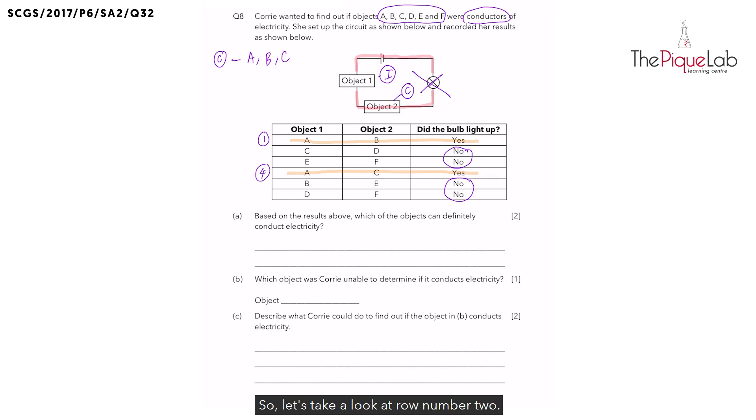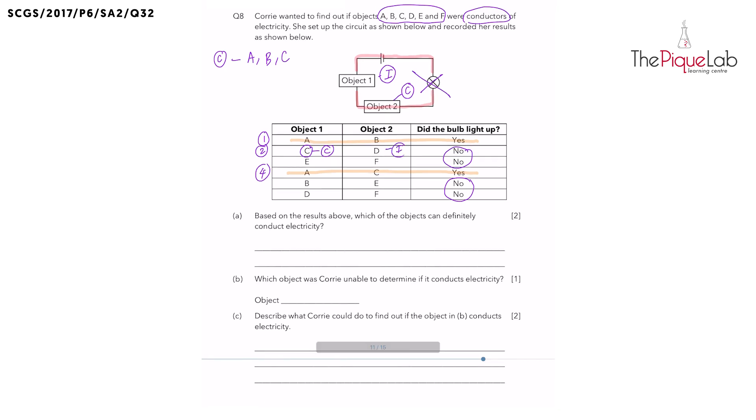So let's take a look at row number two, when objects C and D were in the circuit. Remember, C was an electrical conductor. So what does that tell you about object D? Remember, the bulb did not light up. So D must be an electrical insulator. Now I'm going to write that in the next line as a confirmed insulator. We have object D.